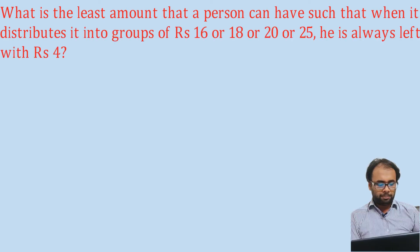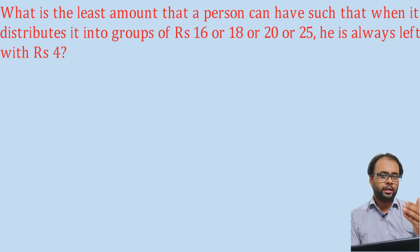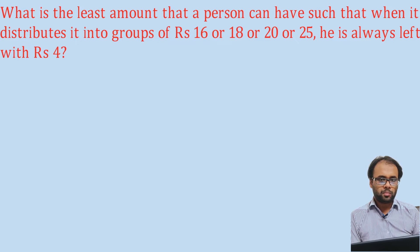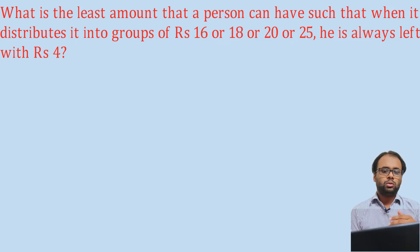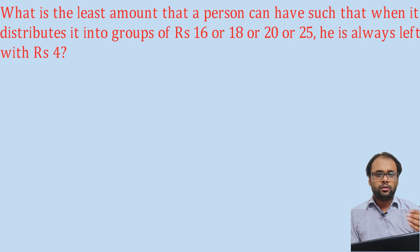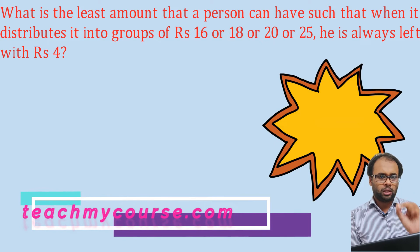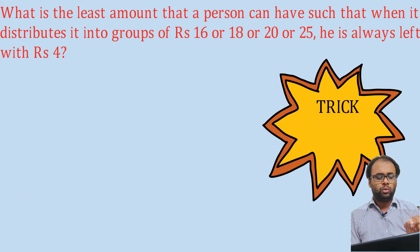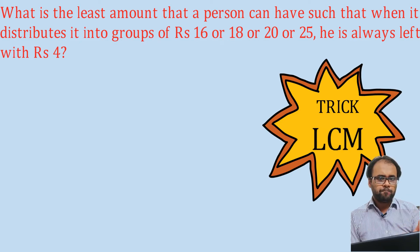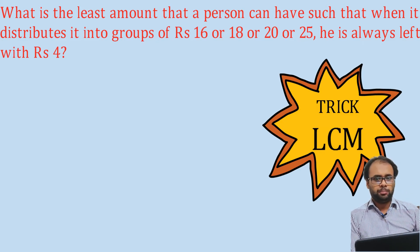Next question: What is the least amount that a person can have such that when distributing it into groups of rupees 16, 18, 20, or 25, he is always left with rupees 4? This is a tricky question. There is a simple trick: whenever such questions come in any exam with 3 to 4 numbers given, you need to find the LCM of all those numbers.